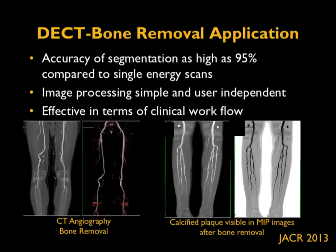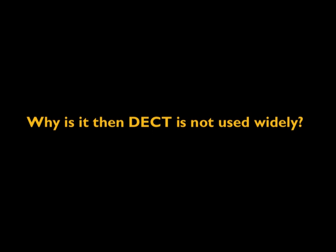Another widely used application is bone removal. Shown here is a CT angiography runoff, with bone removal demonstrated in two different situations, providing much greater accuracy and more effective clinical workflow. These are some unique examples; there are many more niche applications where dual-energy CT is finding its place. The next part of the discussion will address why dual-energy CT is not yet used more widely.